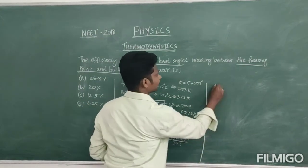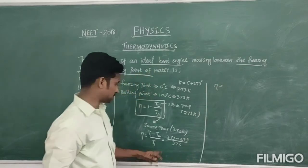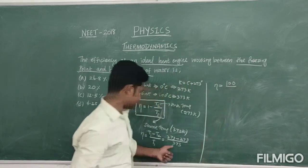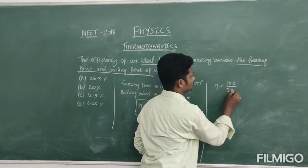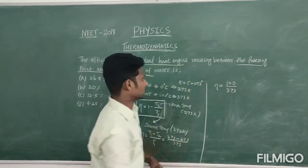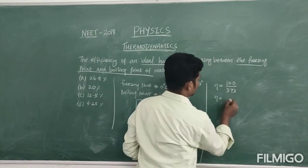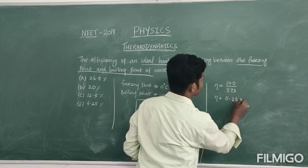Therefore, eta is equal to 373 minus 273, that is 100, divided by 373. So, this value 100 divided by 373 is calculated, that is 0.268.